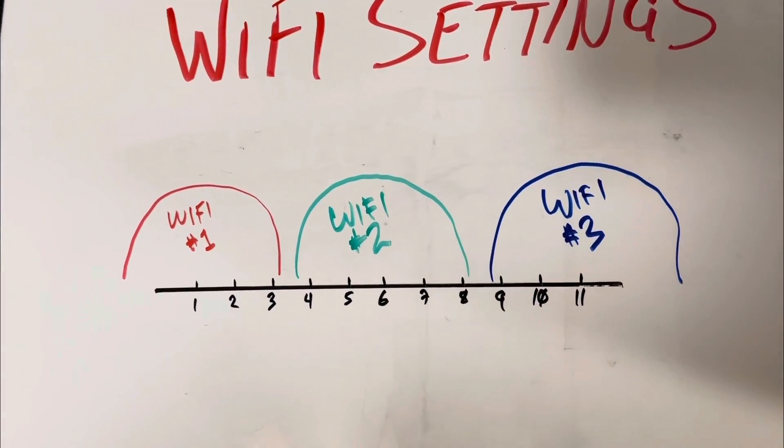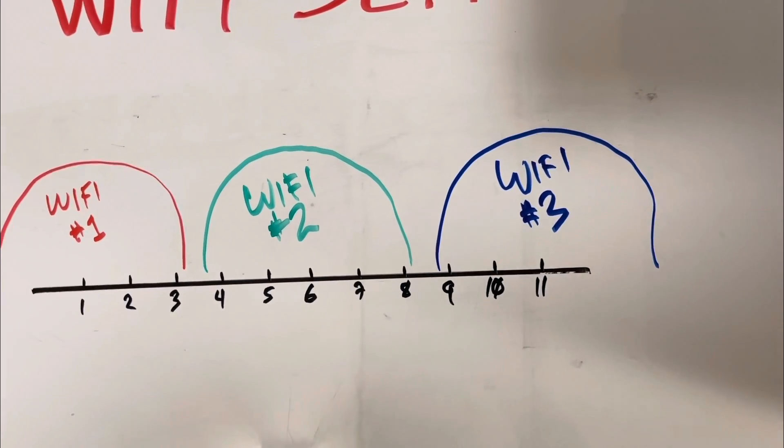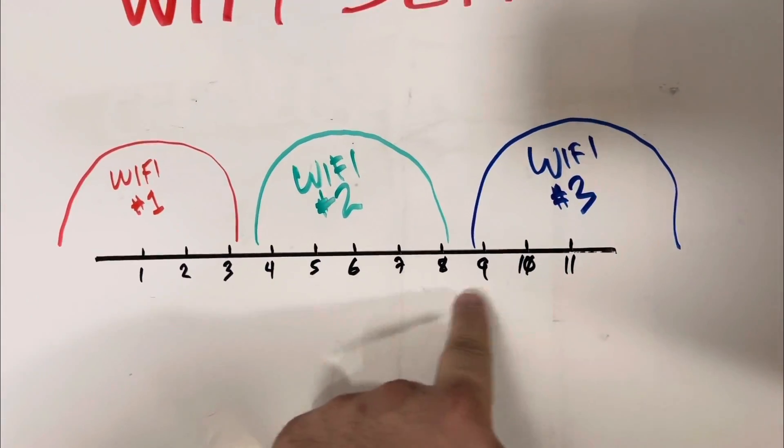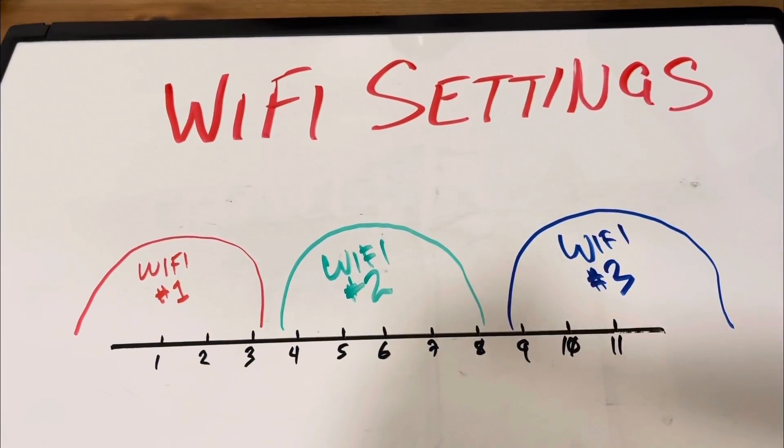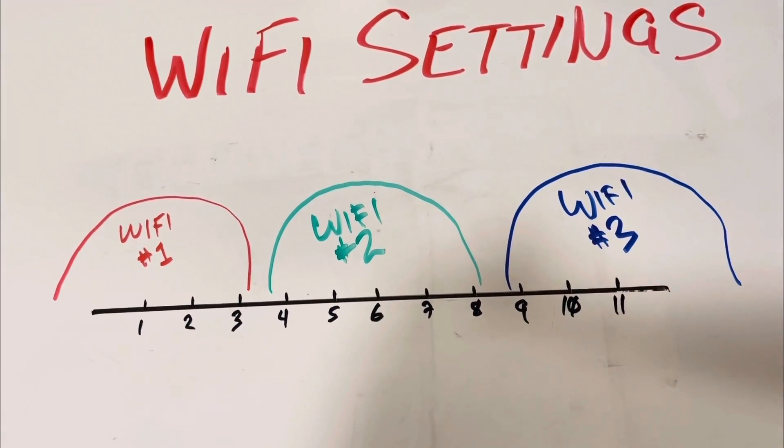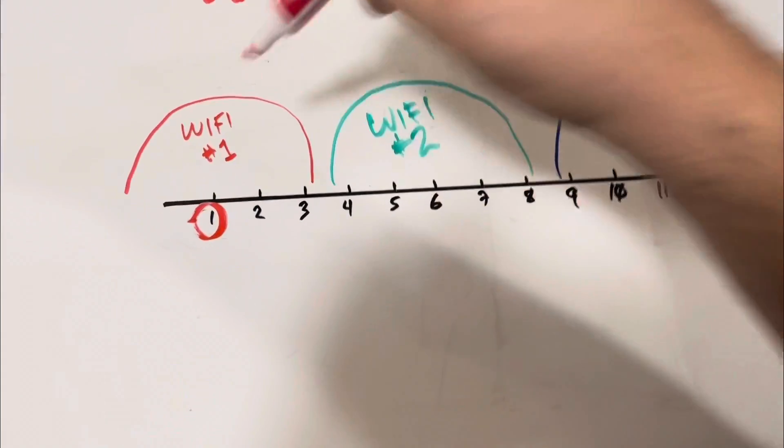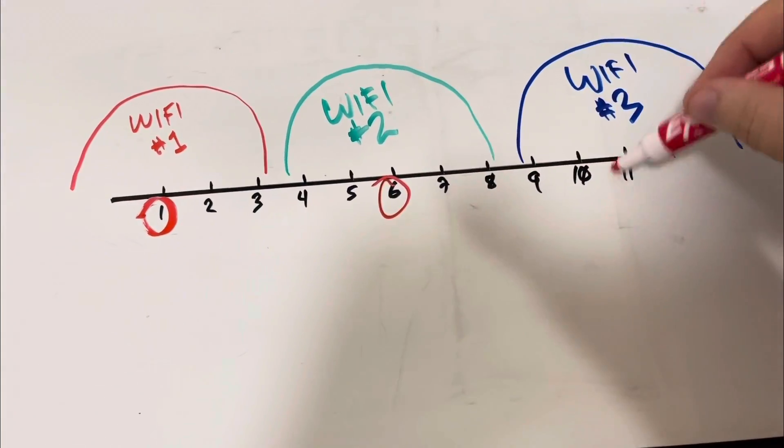Now when we add the third router to the mix, that one takes up channel 11. And so you see we have three routers that are non-overlapping. Notice that to make efficient use of the spectrum, we only use channels 1, 6, and 11.